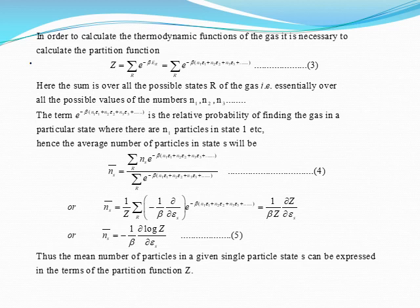To calculate thermodynamic functions of the gas, it is necessary to calculate the partition function, written as Z = summation over R of e to the power minus beta·E_R, which equals summation of e to the power minus beta times (n1·epsilon1 + n2·epsilon2 + n3·epsilon3 + ...). This is equation 3. The sum is over all possible states R of the gas, essentially over all possible values of n1, n2, n3, etc.